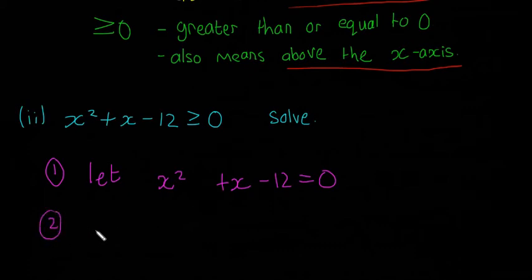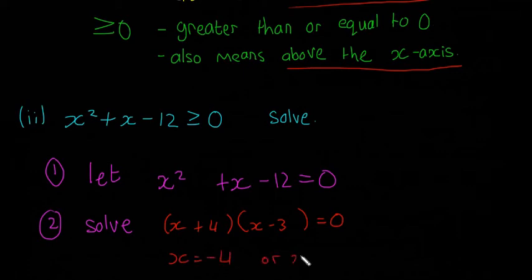And then step 2 would be to solve. I'll change color to red. So I'm going to factorize this equal to zero. This is going to be x and x, it's going to be plus 4 and minus 3. And that means that x is going to be equal to minus 4 or x is equal to 3. So those are our two answers.